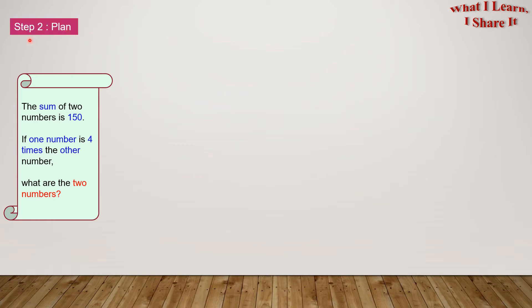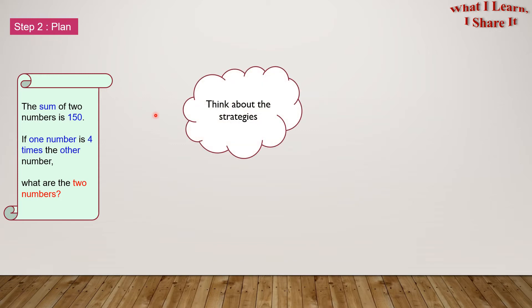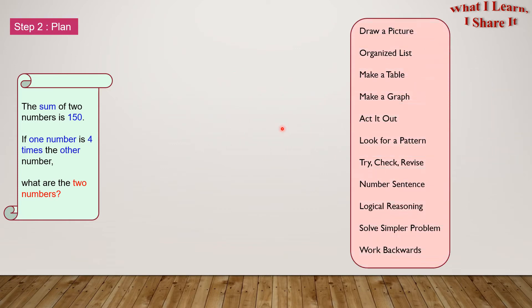Step 2: Plan. Think about the strategies. Here are all the strategies: draw a picture, organize a list, make a table, make a graph, act it out, look for a pattern, try-check-revise, number sentence, logical reasoning, simpler problem, and work backwards. I'm going to use draw a picture and number sentence.